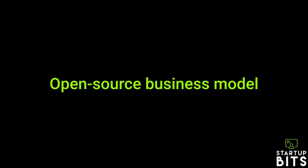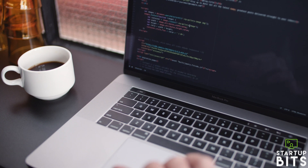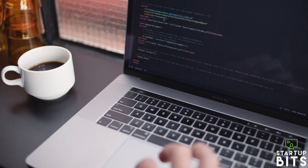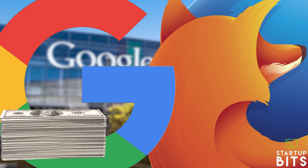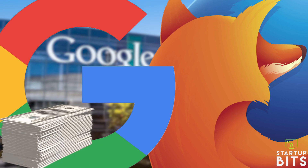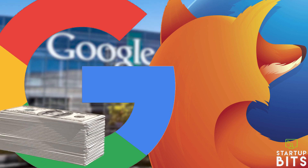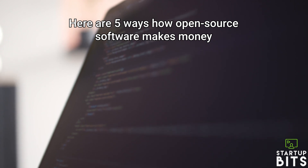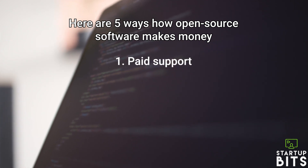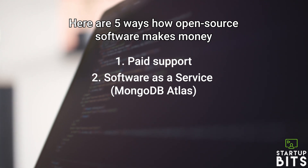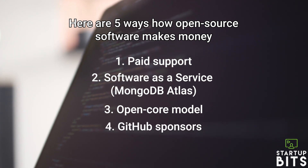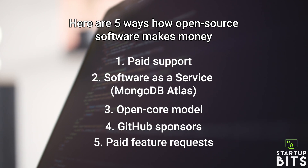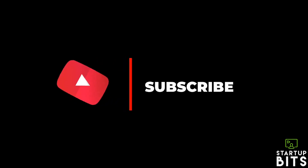Number 10: Open Source Business Model. Open source software has source code that anyone can inspect, modify, and enhance for personal use. In 2018, Google paid $435.702 million to Mozilla for Google to be their default search engine. Five ways open source software makes money: 1. Paid Support, 2. Software as a Service (e.g. MongoDB Atlas), 3. Open Core Model, 4. GitHub Sponsors, 5. Paid Feature Requests. If you've made it this far, please like and subscribe.